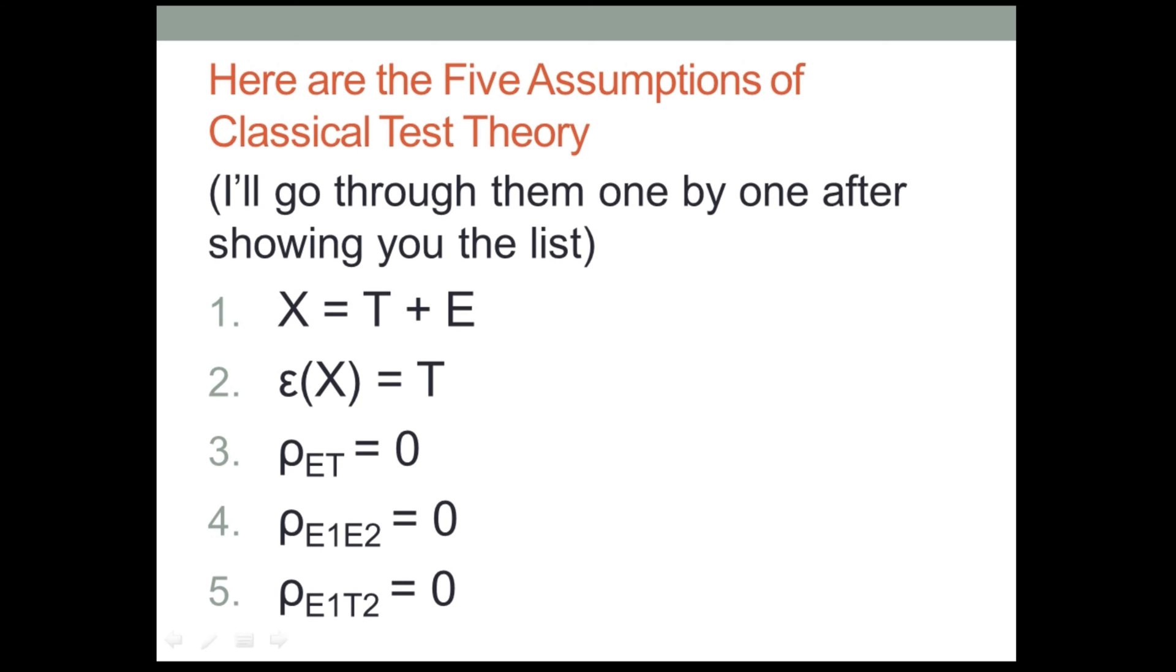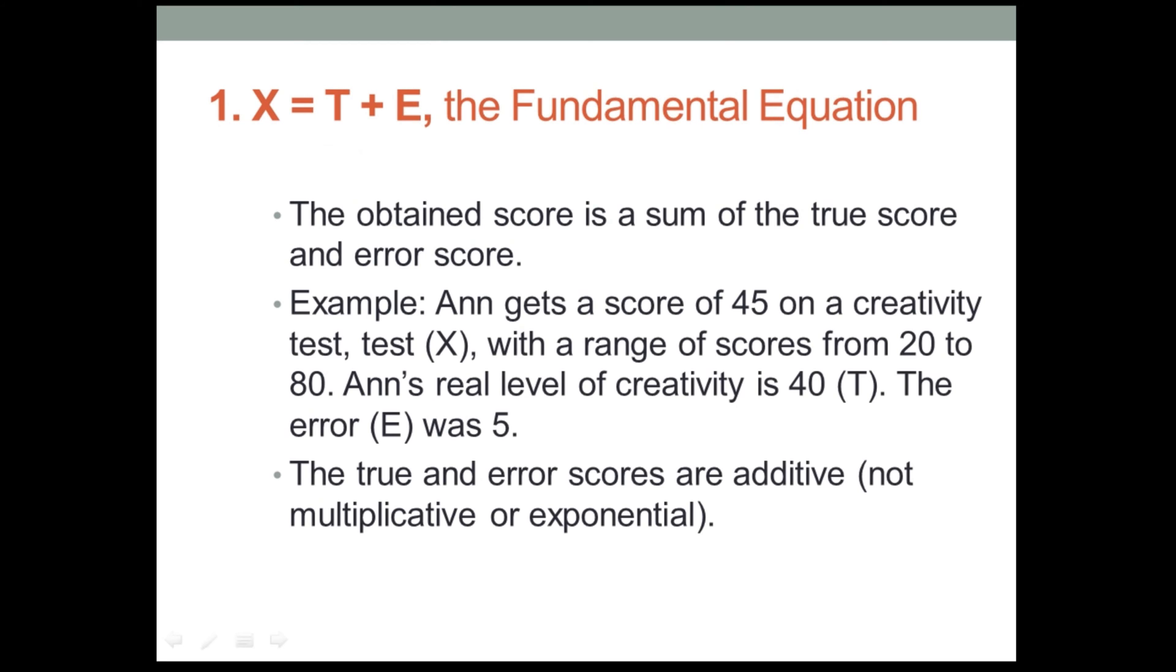Now you can write these down now, but I'm going to talk about them one by one as well, so you also can wait and look at them one by one. Let's look at that first one, X equals T plus E. I consider this the fundamental equation of classical test theory. What it says is that the obtained score X is a sum of the true score T and the error score E.